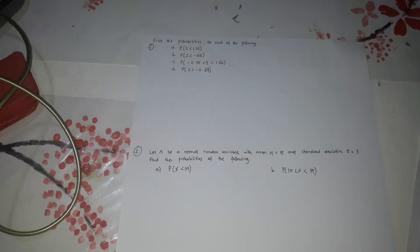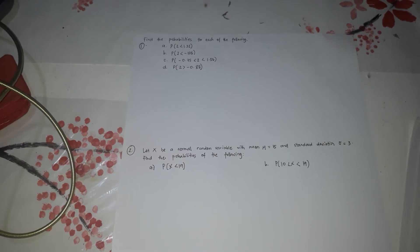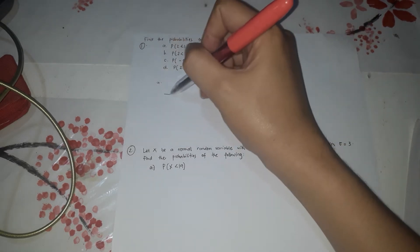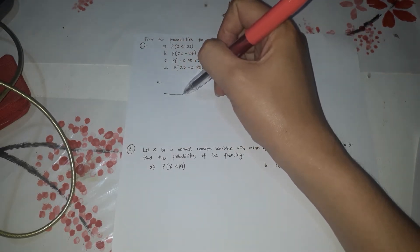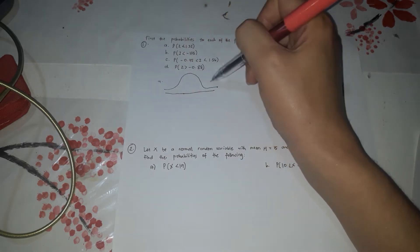Now we're going to find the probabilities for each of the following Z-scores or X. So first, A is equal to P is less than 1.32. So this is Z-score, so it's 1.32. This is less than.